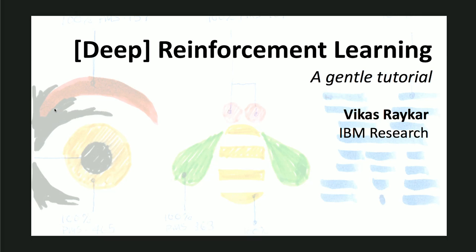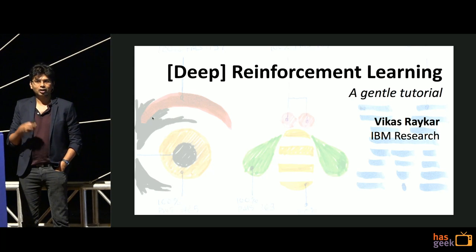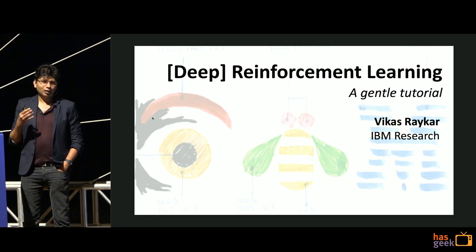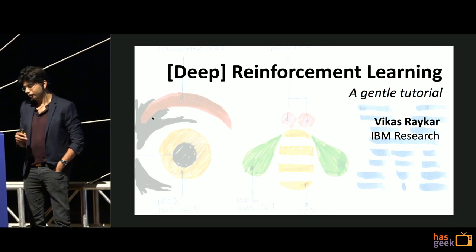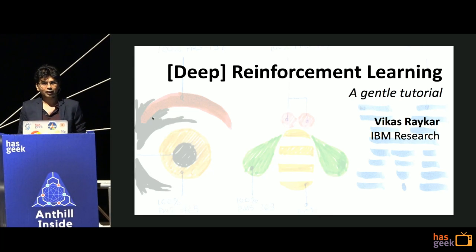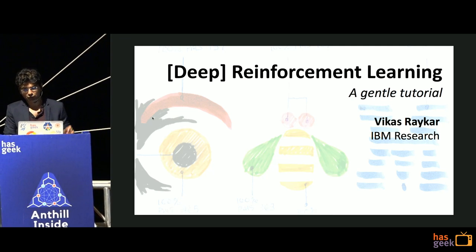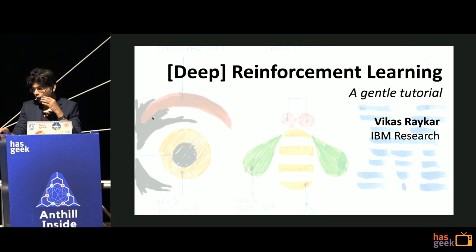Thanks for the invitation. A disclaimer: I'm not an expert, that's why it's a tutorial talk. Just a show of hands - how familiar are people with deep reinforcement learning? Does anyone know what a Markov decision process is? Does anyone know what a policy gradient is? I'll try to tune it to that level and keep it fairly basic. This is a weekend morning so I didn't want to go too deep, but it's still going to be fairly math heavy, so just bear with me.